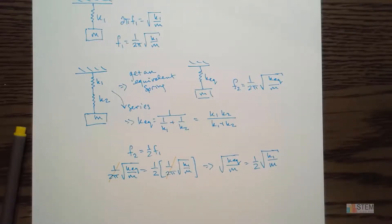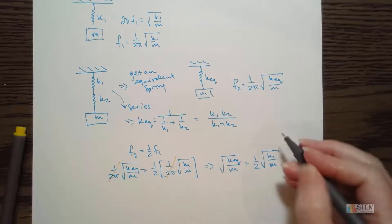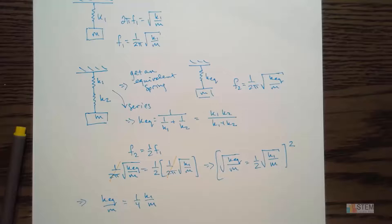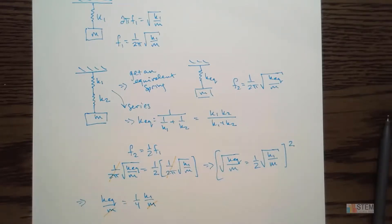Now what should we do? Remember, we want k2 in terms of k1. So I think what we should do next is square this whole thing to get rid of the square roots. So if we do that, we're going to have k equivalent over m, and then that's going to equal 1 fourth, because we have the 1 over 2 here, times k1 over m. So we're getting closer. First of all, it looks like these m's are going to cancel. So let's just get rid of those.